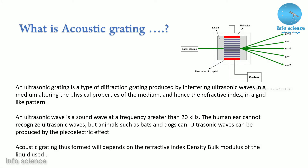An acoustic grating is produced by interfering ultrasonic waves in a medium, altering the physical properties of the medium and hence the refractive index in a grid-like pattern. When we form an acoustic grating, we use ultrasonic sound waves. An acoustic grating involves sound waves at a frequency greater than 20 kHz. The human ear cannot recognize ultrasonic waves, but animals such as bats and dogs can.